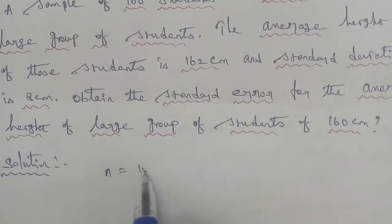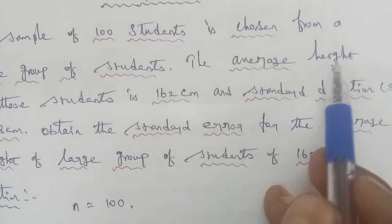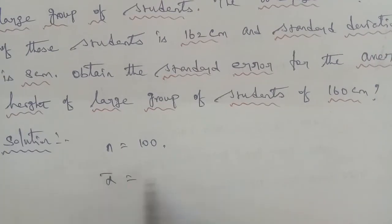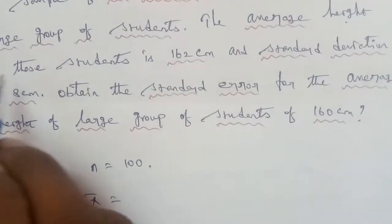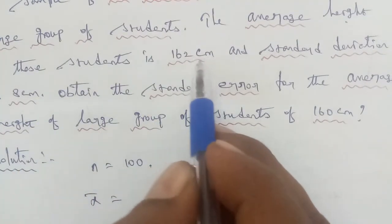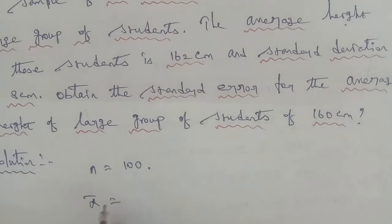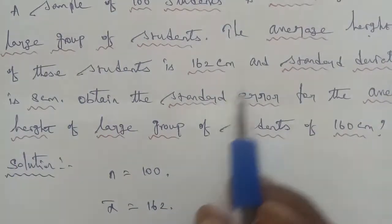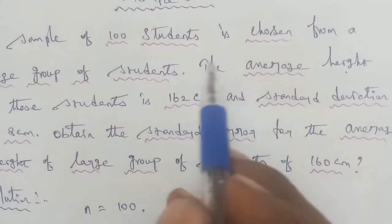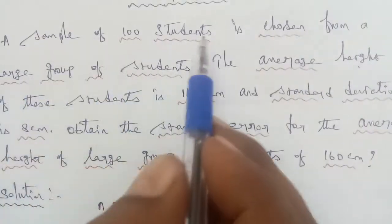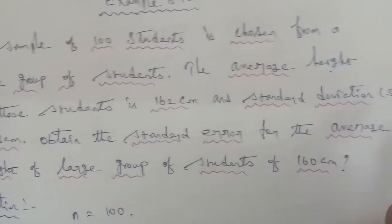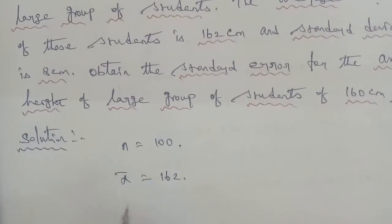So n is equal to 100. Next, x̄ — that is x bar — is the average height of the students, which is 162 centimeter. So x bar is equal to 162. And next, the standard deviation is 8 centimeter, so sigma is equal to 8. The sample standard deviation symbol is s, and the sample standard deviation is 8 centimeter.